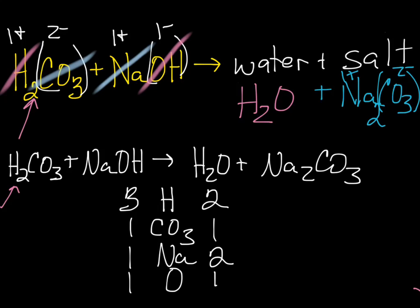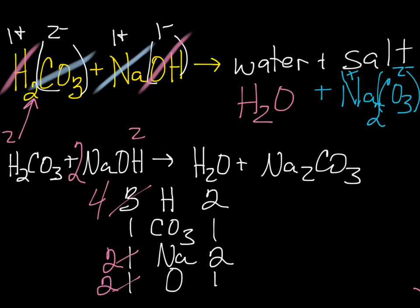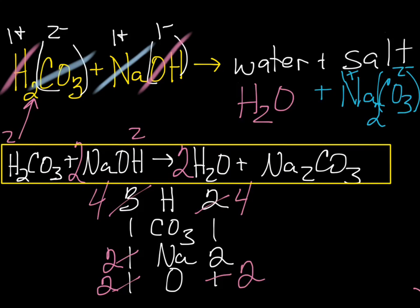Because H's appear in multiple places on the same side of the equation, we'll save those until last. CO3s are good. Let's fix the Na's — put a 2 in front of NaOH. We now have two Na's. Our O's: we have two O's. Our H's: we have two plus two, which makes four. Na's are now good. Let's put a 2 in front of H2O. We now have four hydrogens and two oxygens on the product side, and that's our final balanced equation for the neutralization reaction of carbonic acid plus sodium hydroxide.